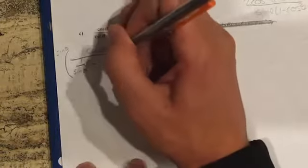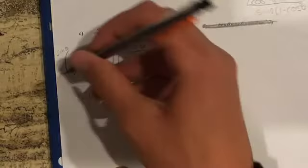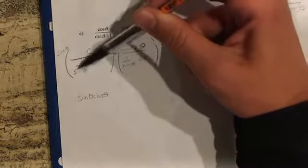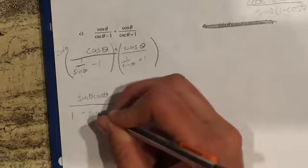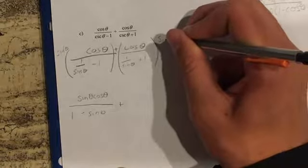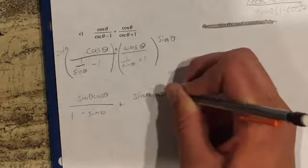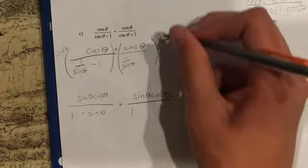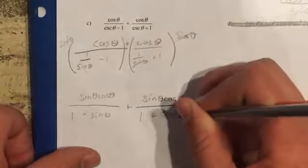Multiplying by sine on top gives you sine theta cosine theta. On the bottom, the sine cancels, but you still have to multiply it by the negative 1, so it's minus sine. Doing the same thing to the second fraction — the top becomes sine cosine, they cancel on the bottom to 1, and you still multiply the sine by positive 1, so it's plus sine of theta.